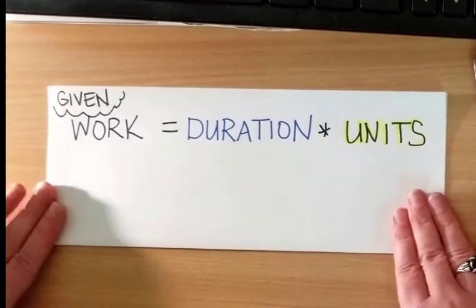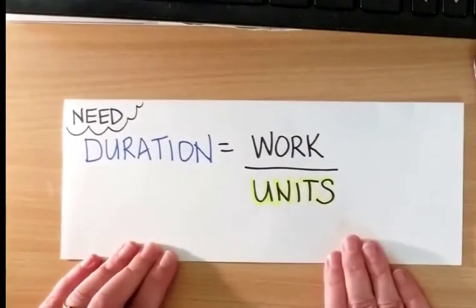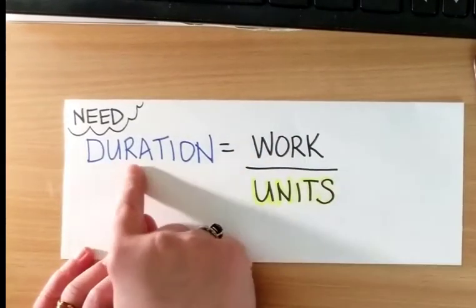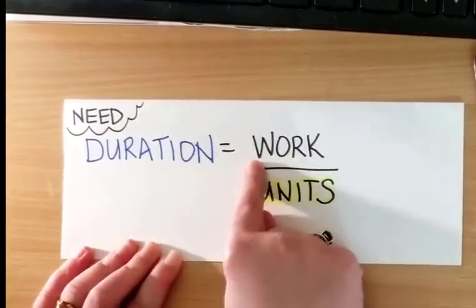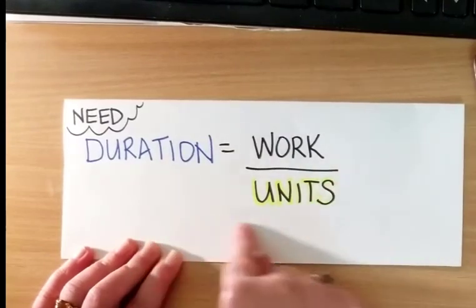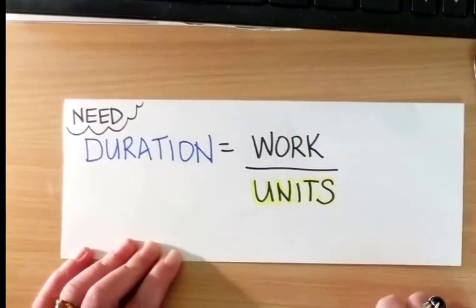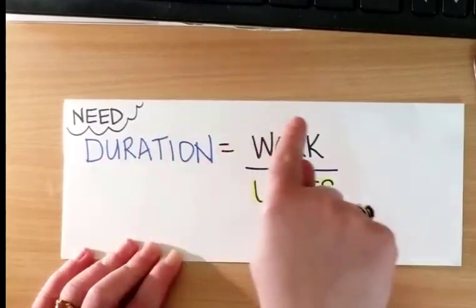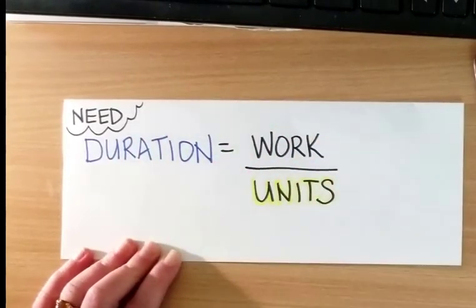The reason you need to understand is because you need to flip it around. What you need to use to solve the problem, because it asks for duration, is you need to know how to use algebra to rearrange the elements. So now the formula we're going to use is duration equals work divided by units.